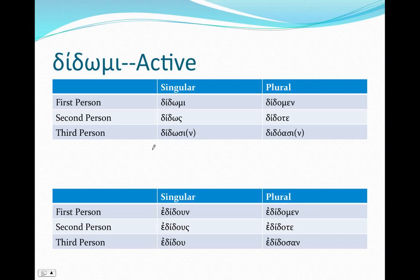Let's take a look at the present first. In the active voice with the present stem, we have: didōmi, didōs, didōsin, didomen, didote, didoasin. One very important thing to notice: the stem in the singular is long — we're going to use a long omega, a long 'o' — but in the plural it's short. This is going to be true throughout the mi verbs: in the present tense, long in the singular, short in the plural.